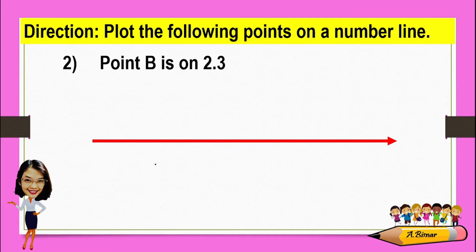Another. Point B is on 2.3, which is properly read as 2 and 3 tenths. Since our ones place is 2, this is not between 0 and 1. This will be between 2 and 3.